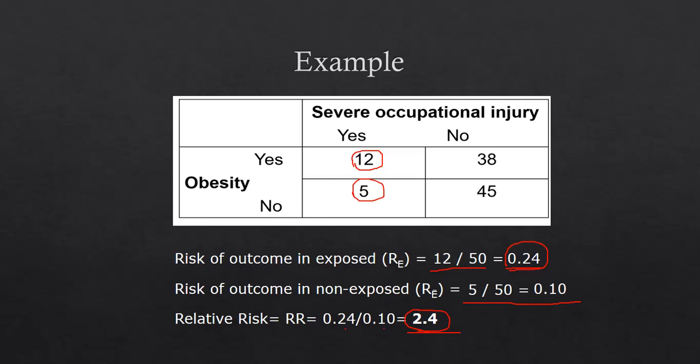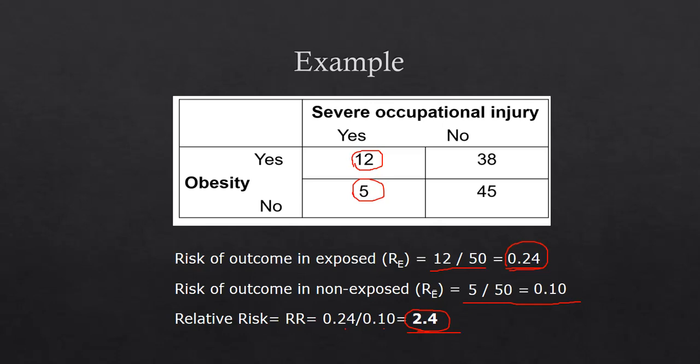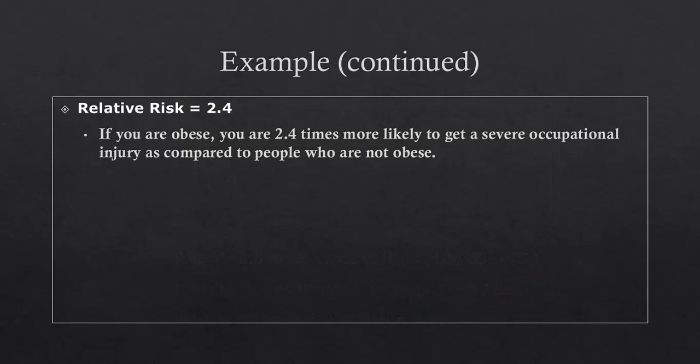Now that's great and all. We got the 2.4, but what does it exactly mean? Like what does that mean? So what does that mean for the cohort study? Essentially what it means is that if you are obese, you are 2.4 times more likely to get a severe occupational injury as compared to people who are not obese.